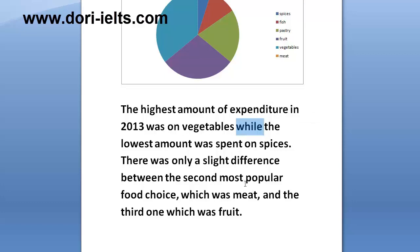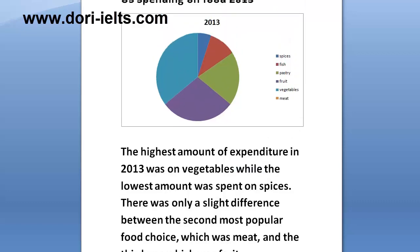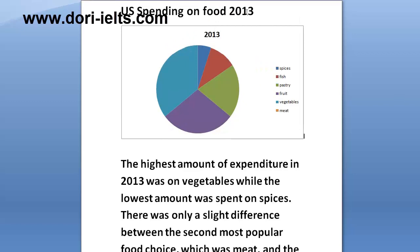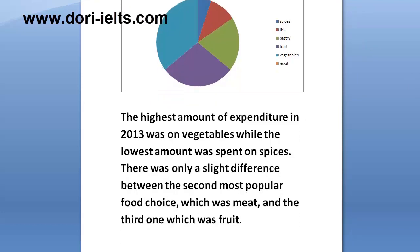And don't forget — this is very important — in your overview, you never use any numbers. You don't refer to the numbers or percentages in your pie chart or graph or diagram. If you want to refer to something, it could be the date, such as 2013, especially if you have two or more dates. But nothing else.